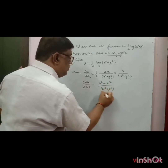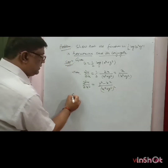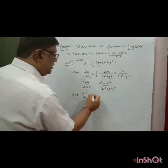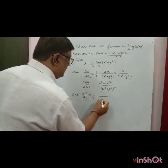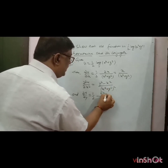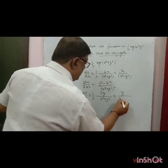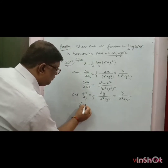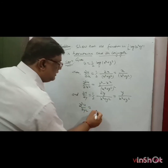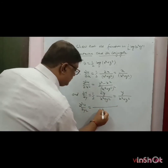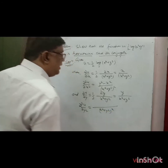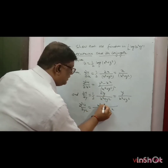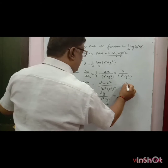Similarly, find ∂u/∂y: differentiating with respect to y gives y/(x² + y²). Then find ∂²u/∂y²: using the quotient rule, this equals (x² − y²)/(x² + y²)². This is equation 2.